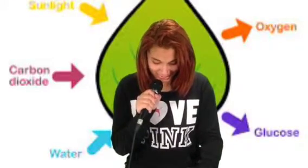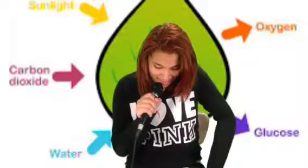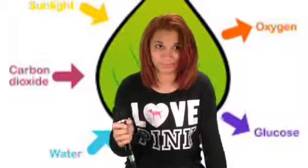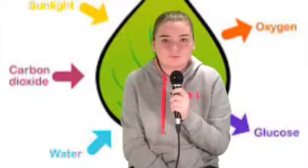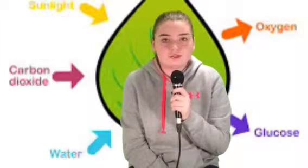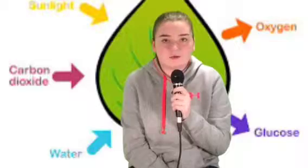Photosynthesis is the process in which sunlight is used to make a sugar called glucose. In photosynthesis, you need carbon dioxide, sunlight, and water.